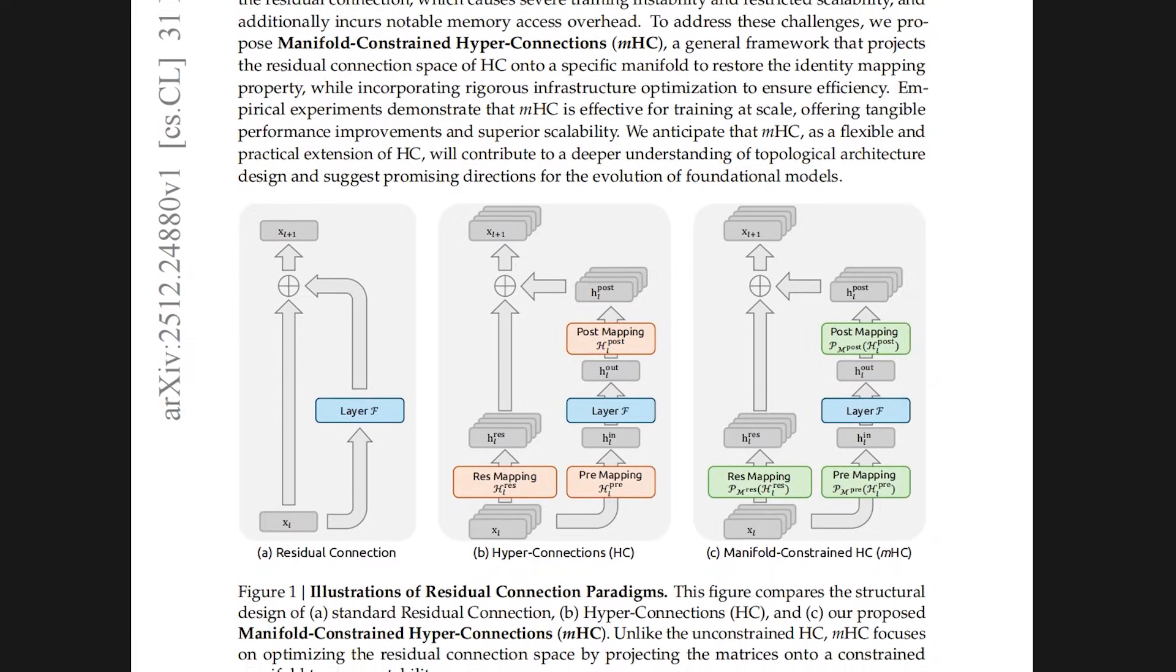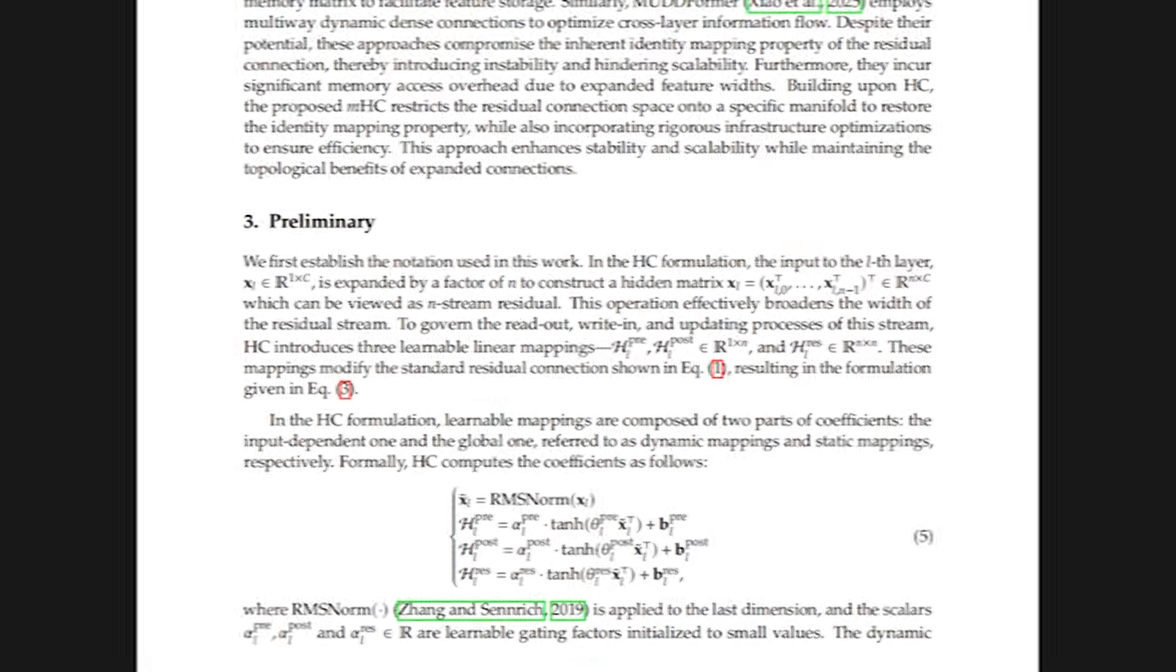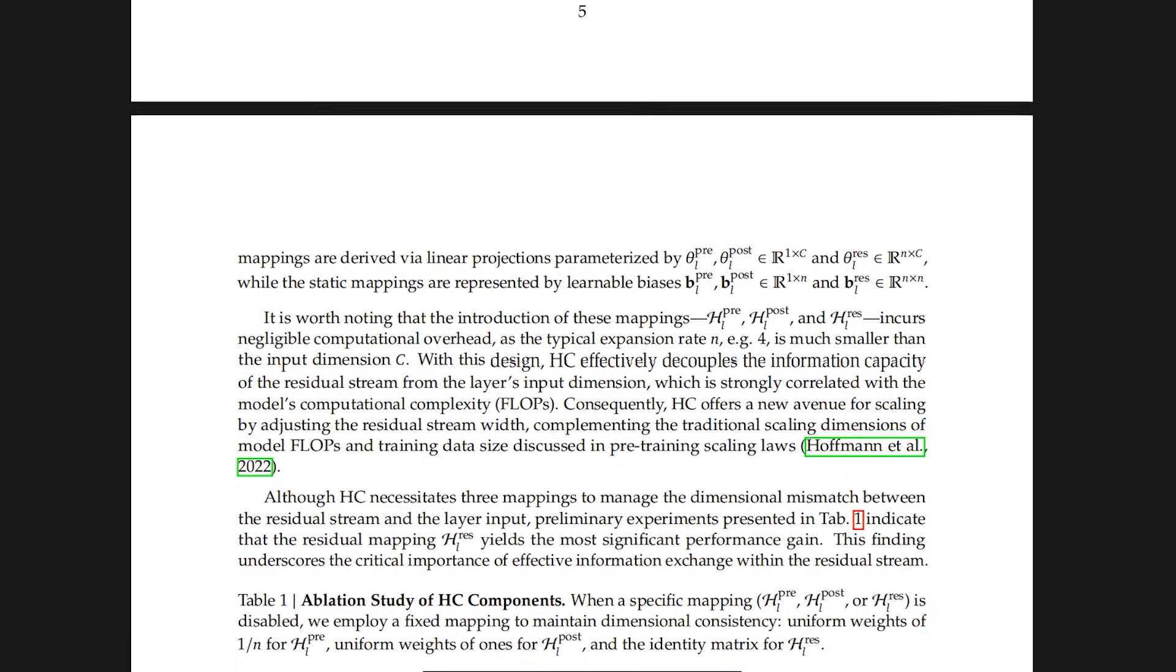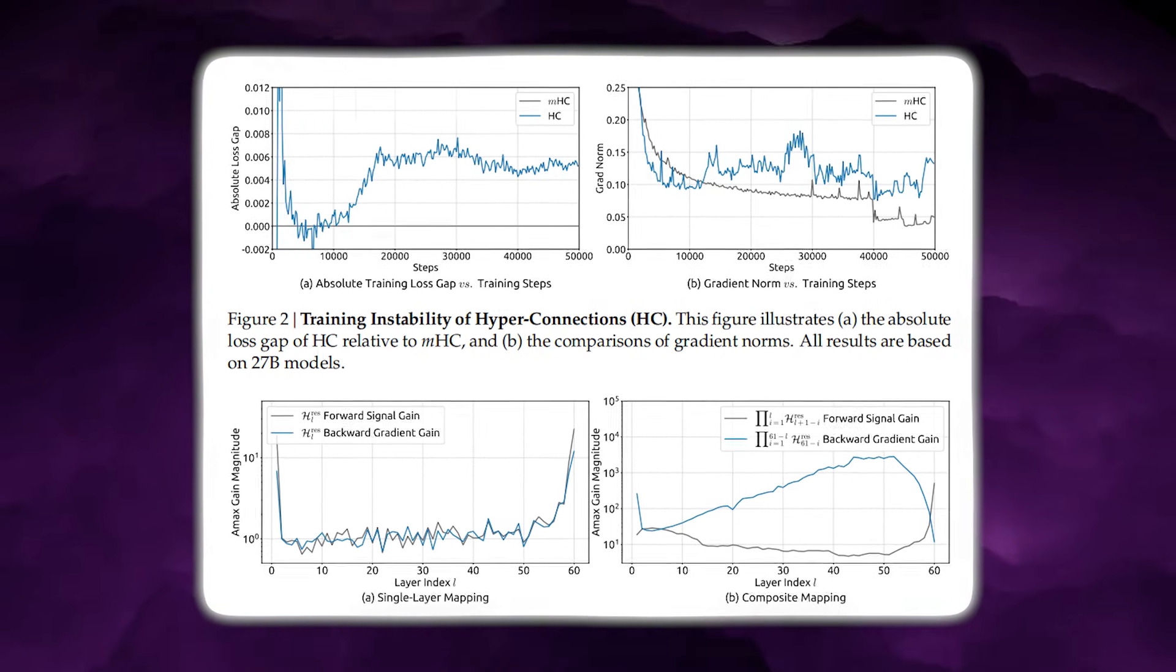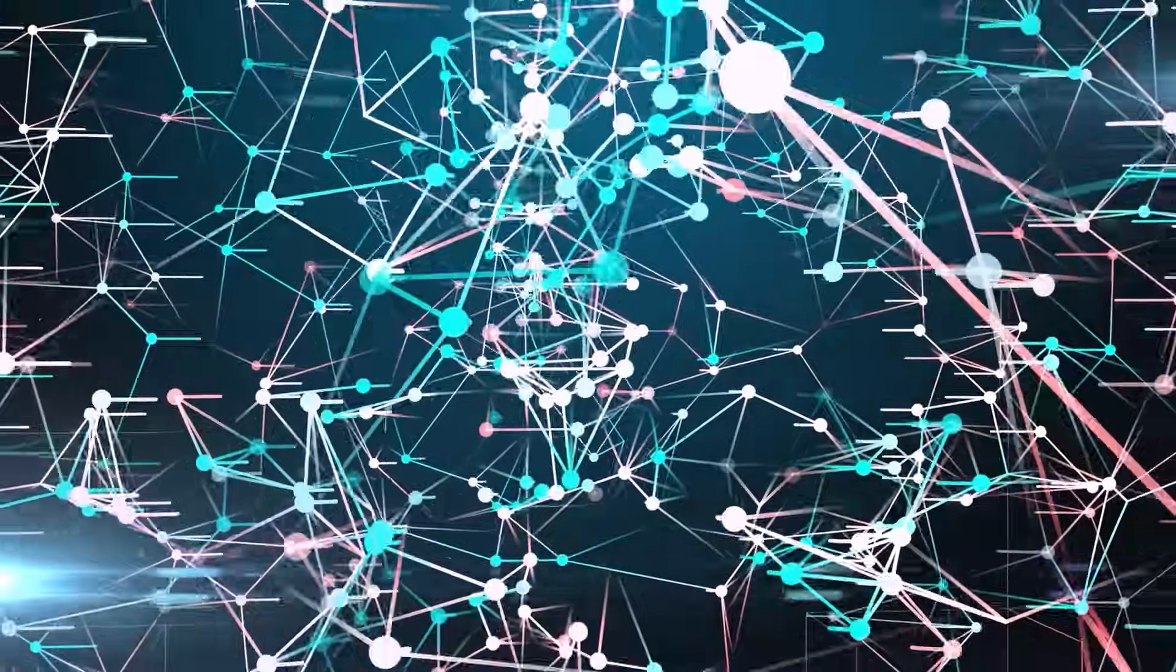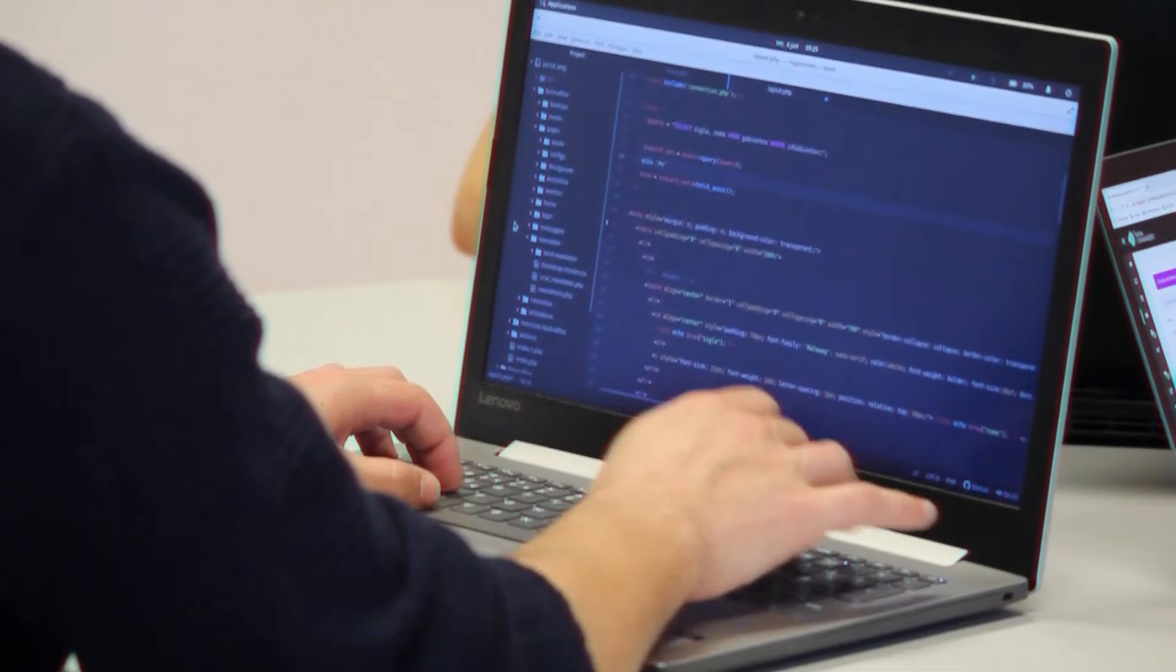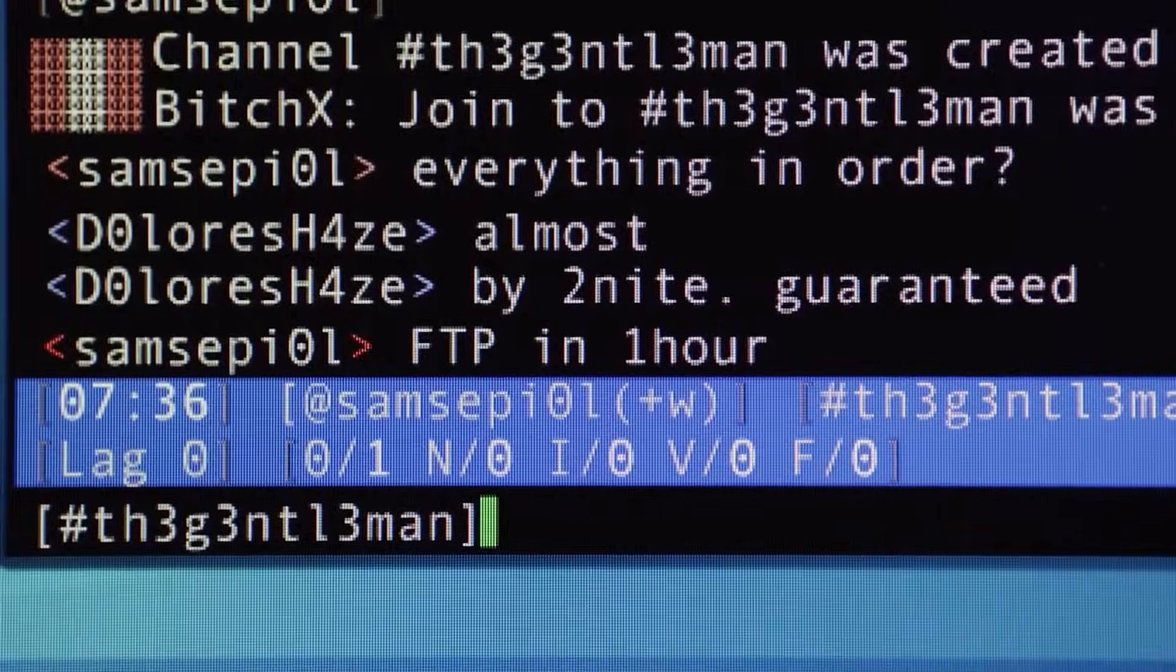One of the most interesting observations from this paper is how information mixes differently across depth. In the first half of the network, A matrices behave more like pooling or averaging, more generalized information mixing. In the second half, the model treats different channels more sharply, routing information more precisely across streams. This resembles the intuition of early layer pooling and late layer specialization we've seen in CNNs and deep feature hierarchies. It's a reminder that architecture doesn't need to be chronological to be intuitive. It needs to behave like signals should behave when intelligence scales.